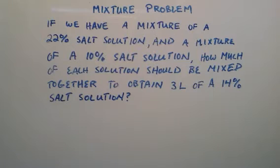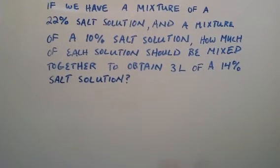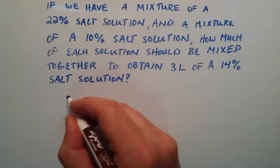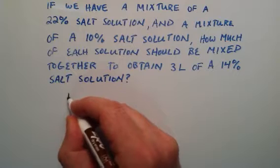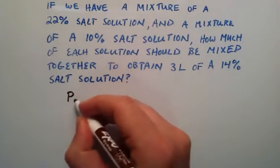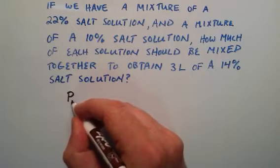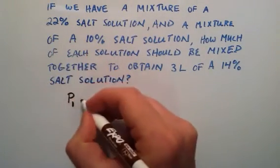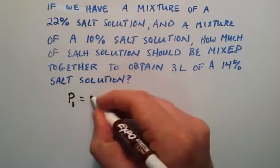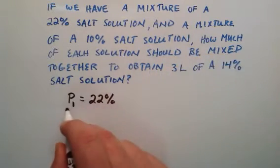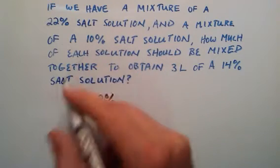When you're dealing with a mixture problem with two mixtures combining into one, you want to figure out the percentage. In this case it's salt - we have a percentage of salt. We'll call it P1, and we're going to call P1 the 22%, the percentage of salt in the first solution.